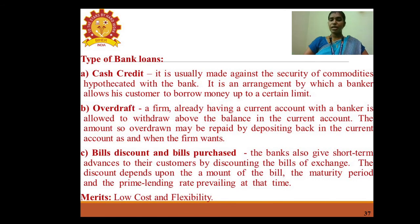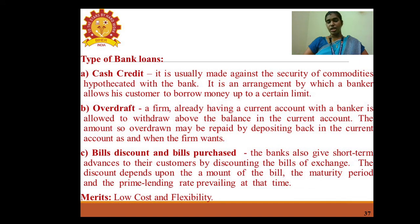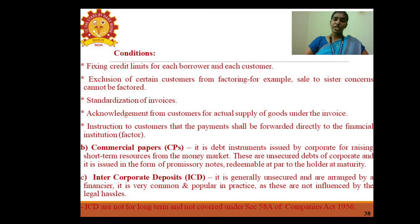Types of bank loans: cash credit — usually made against the security of commodities hypothecated with the bank, allowing customers to borrow up to a certain limit; overdraft — allows a firm with a current account to withdraw above the balance in the account, repaid by depositing back as funds become available; bill discounting and bills purchased — the bank gives short-term advances by discounting bills of exchange, with the discount depending on the amount, maturity period, and prime lending rate. Merits: low cost and flexibility.